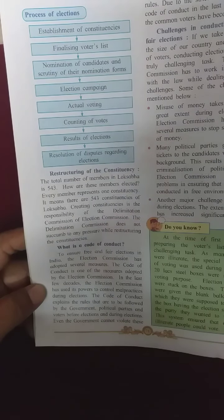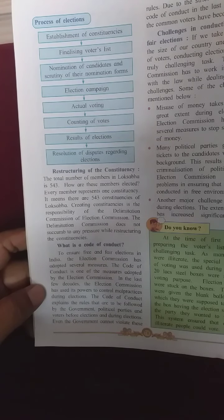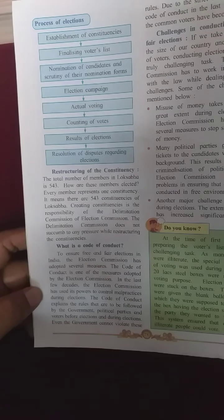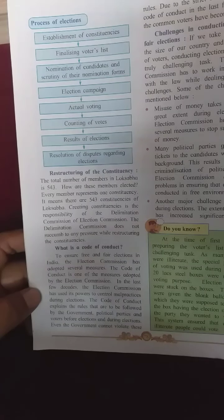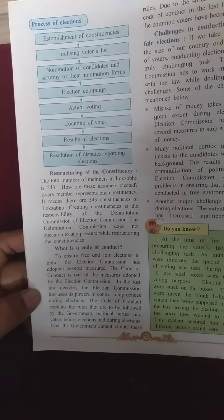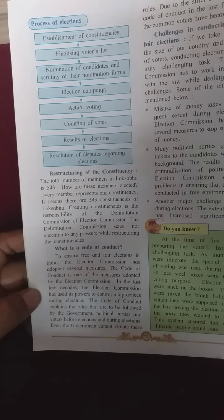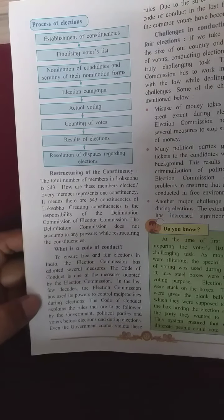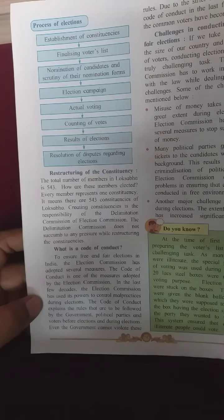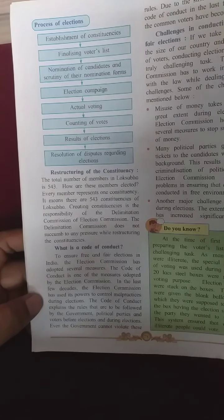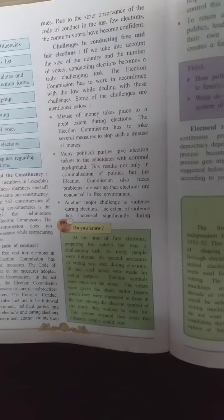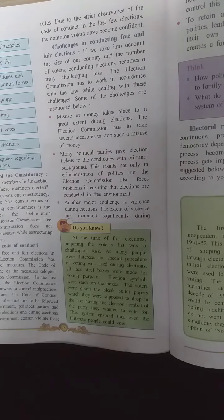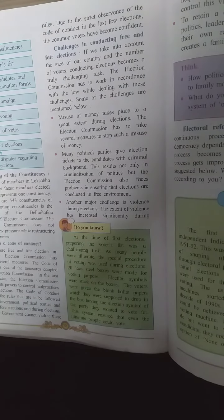The delimitation commission does not come under any pressure while restructuring constituencies. To ensure free and fair elections, the election commission has adopted several measures, one of which is the code of conduct. The code of conduct explains the rules to be followed by the government, political parties, and voters before and during elections. Even the government cannot violate these rules. Due to strict observance of the code of conduct in recent elections, the common voters have become more confident.